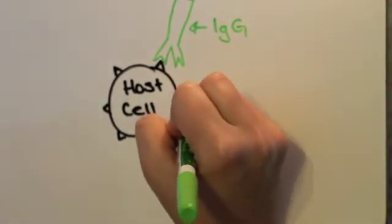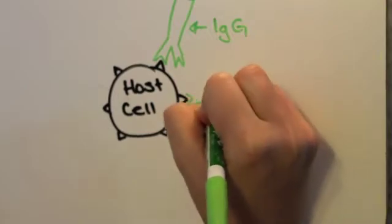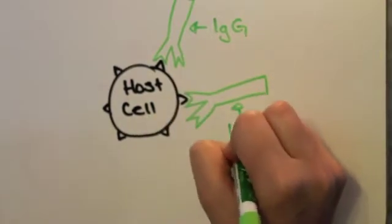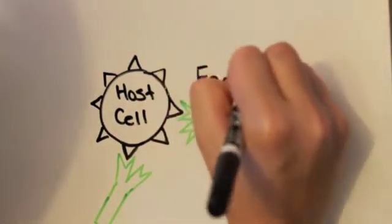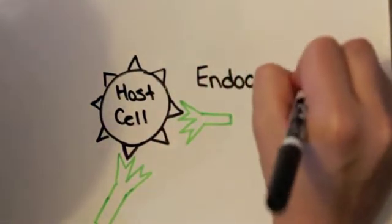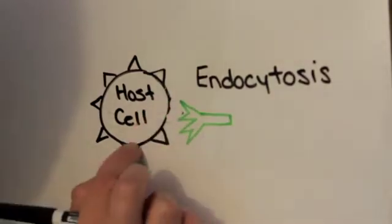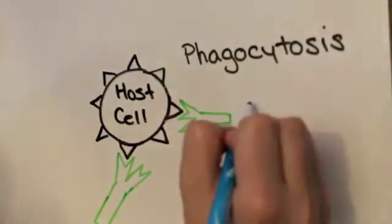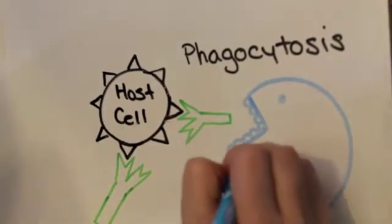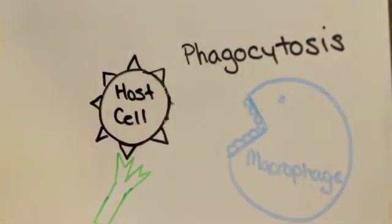The theory is that autoantibodies then attack the specific host cell resulting in its malfunction. There can be endocytosis where the host cell engulfs its own receptor and then redistributes the proteins. Phagocytosis when there is antibody opsonization of the receptor triggering the macrophage to destroy it.